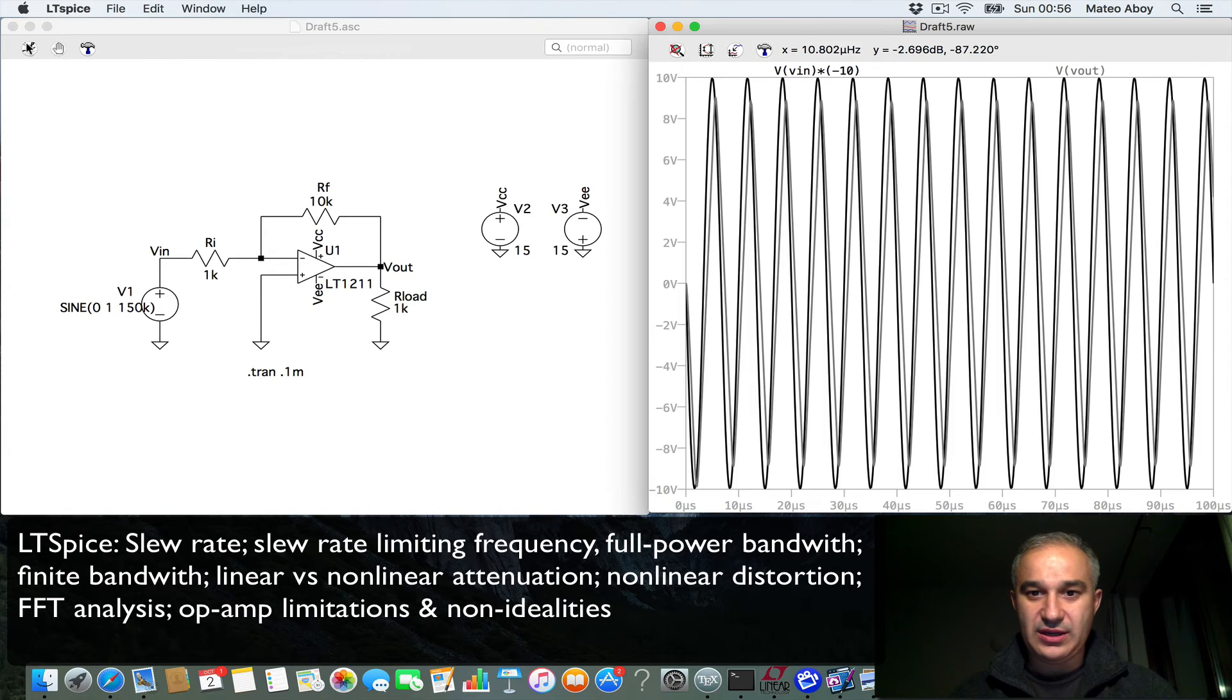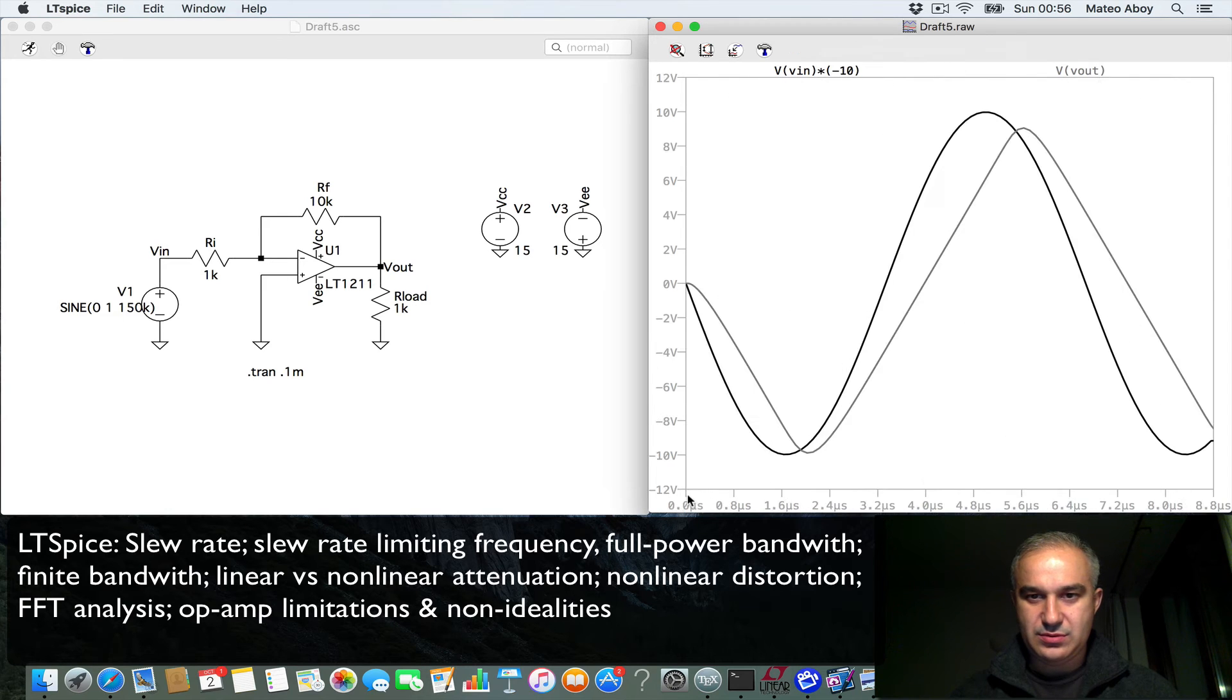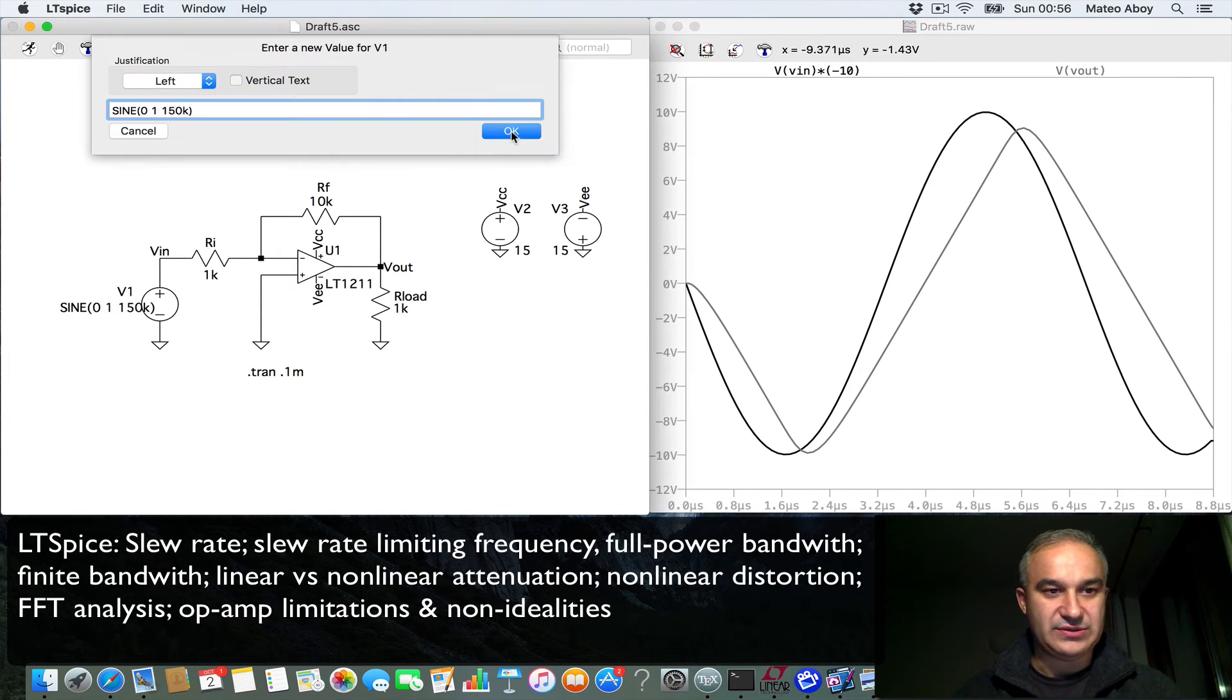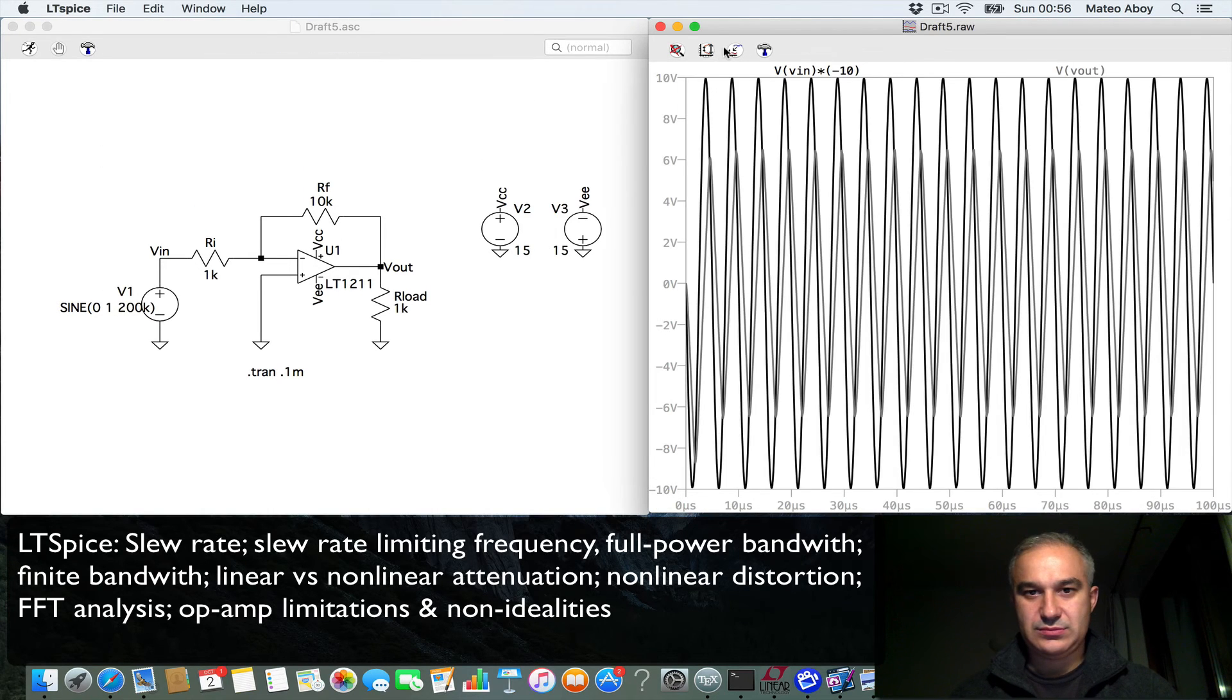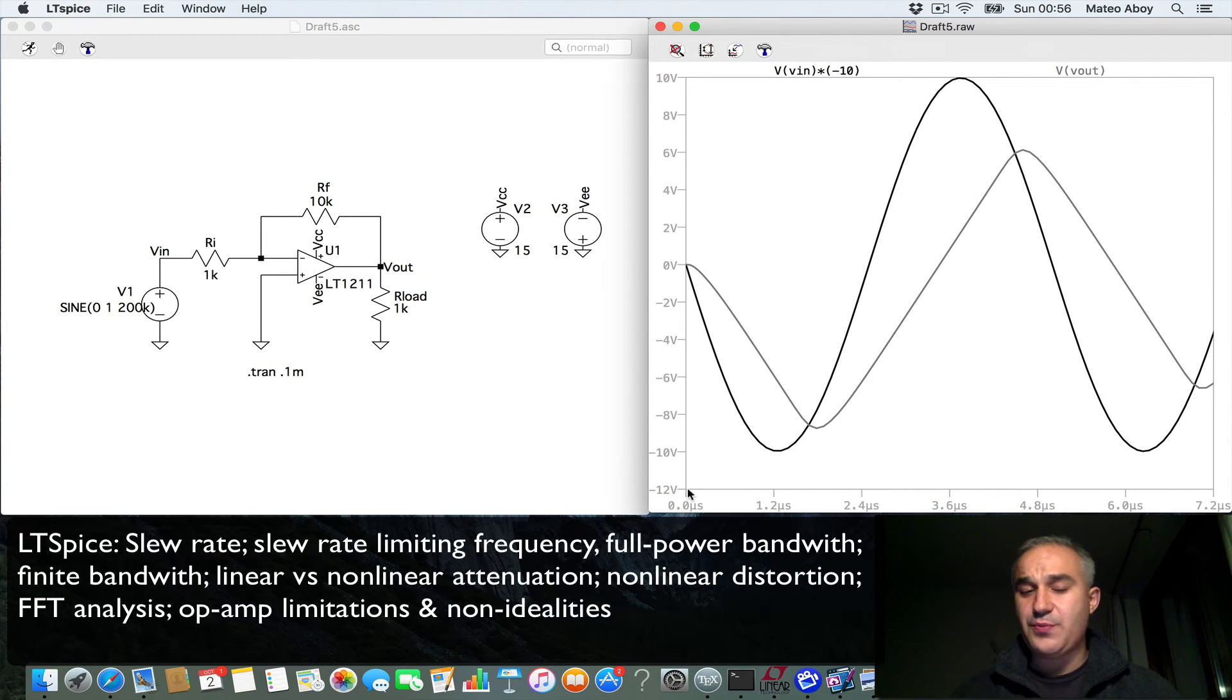That not only we are starting to lose gain, but it's starting to become very triangular. Here we are at 200. Let's do this. 200. Look at that. So we are losing gain. And this is the operational amplifier is not able to keep up.